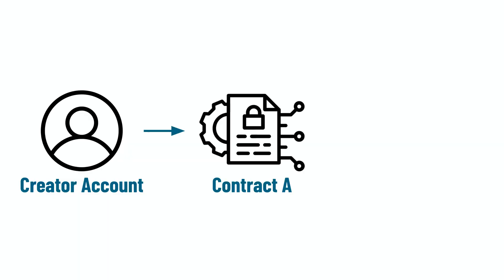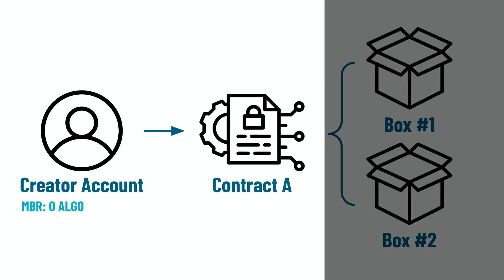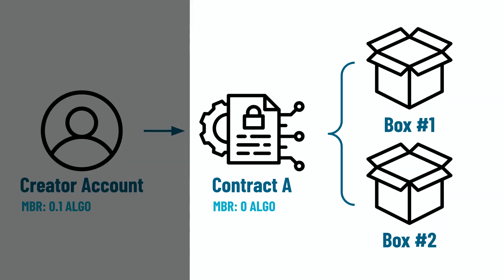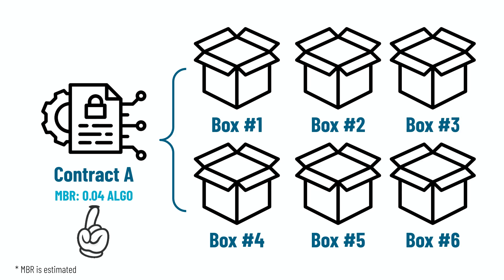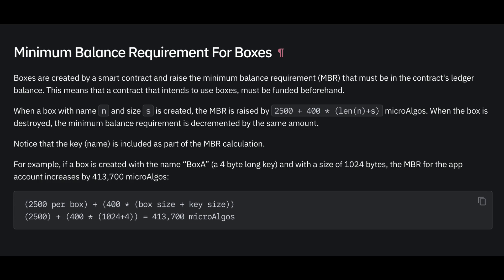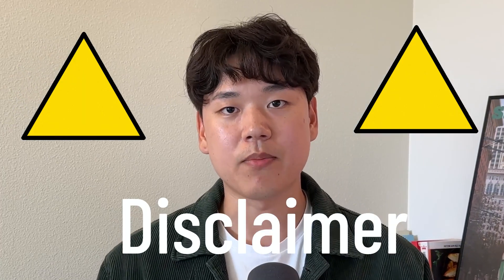Let's say you create an Algorand smart contract called contract A and you create two boxes in it. As the creator of contract A, your MBR goes up for creating a smart contract. But for the two boxes created in contract A, the smart contract itself has to pay the minimum balance for those boxes. So as the number of boxes grows, the MBR for contract A will grow as well. Every Algorand smart contract also has an associated application account that can receive and send Algos, so to be precise, the MBR for contract A's application account goes up. I won't go into the math of calculating MBR for creating a box, but I'll leave a link in the description to the developer portal. Now there's one big disclaimer: if you delete an application without deleting all of the outstanding boxes in the smart contract, all of the MBR for those boxes will be permanently lost. So it's highly recommended you delete all the boxes and withdraw all the funds in the app account before you delete your smart contract.